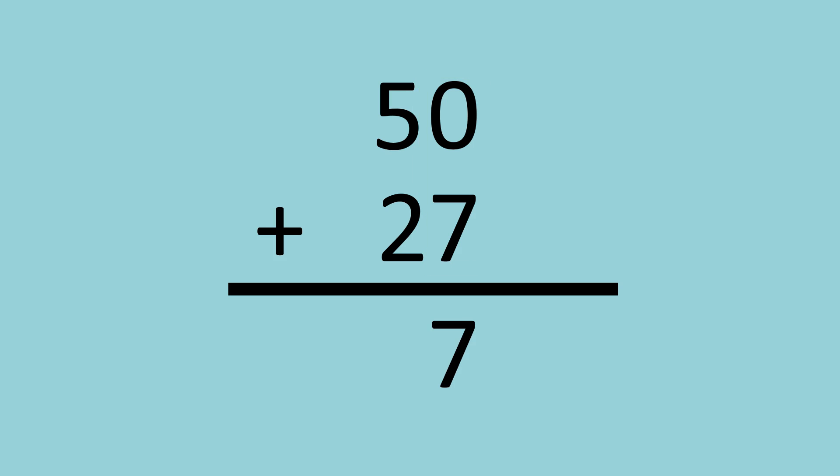Then, we will now add the tens digits which are 5 and 2. 5 plus 2 is equal to 7. Therefore, 50 plus 27 is equal to 77.